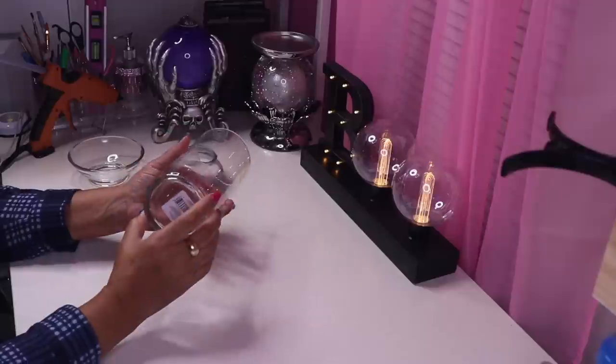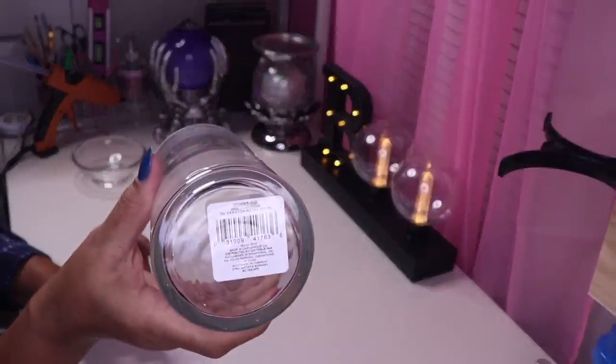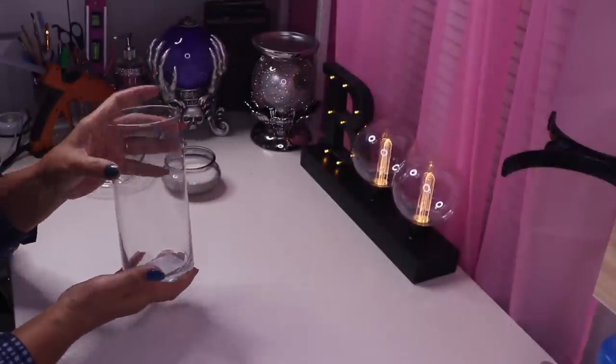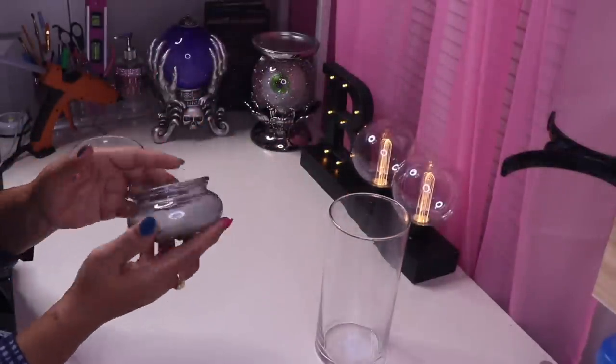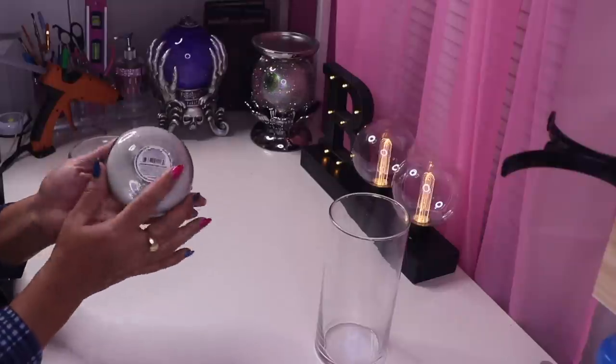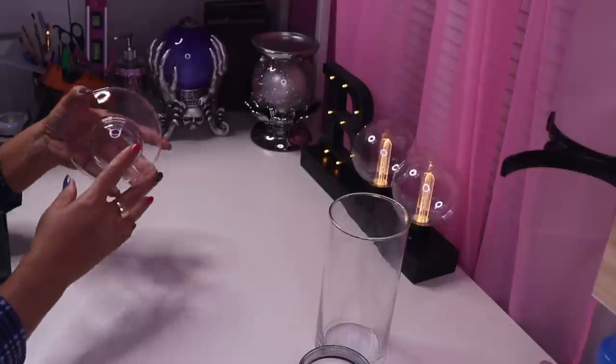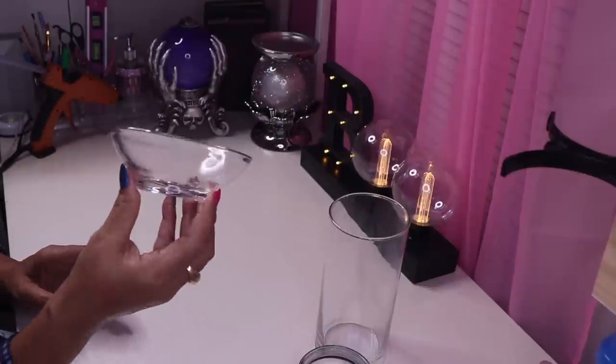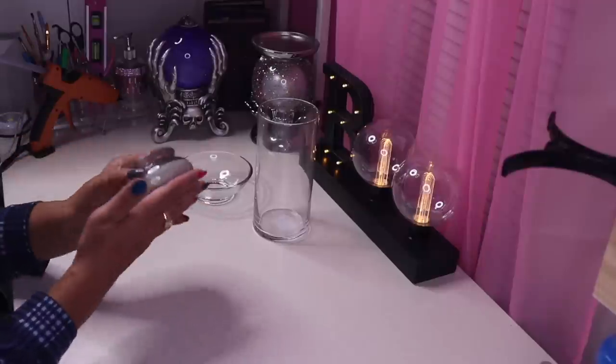Okay, next up I have this hurricane from Dollar Tree. There's the SKU and this is the shorter one. I also have this candle inside this glass from Dollar Tree as well. Finally I have this bowl and I picked this up at Goodwill.